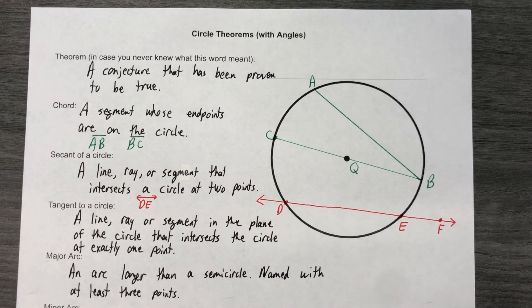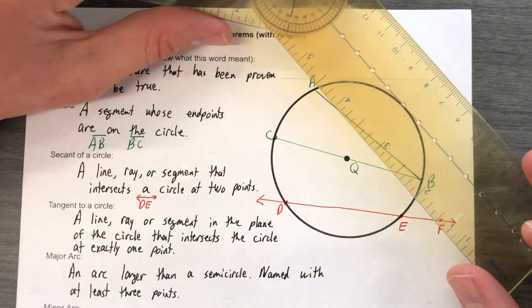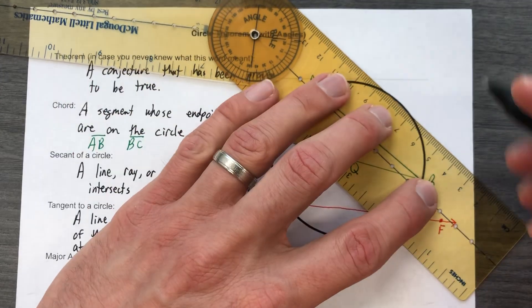So again, not coming in from an odd angle—a line, ray, or segment in the plane of the circle that intersects the circle at exactly one point.